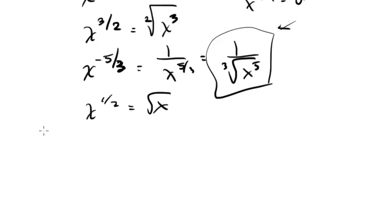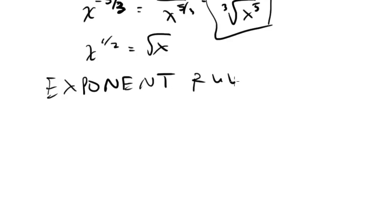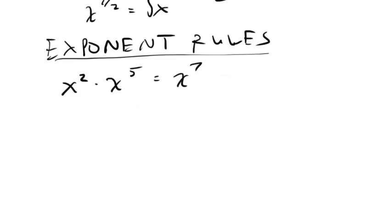Now that we've talked about exponents and definitions, let's talk about the exponent rules — the ways to manipulate exponents in shorter manners. Let's look at x to the 2 times x to the 5. The rule for multiplying is you add the exponents, so this is just x to the 7th.